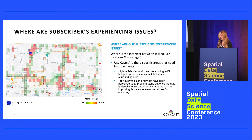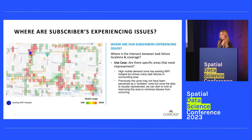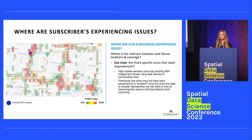The third use case — where are subscribers experiencing issues? Going back to task failures, we add a new layer of data onto our maps. The red points visualize moments where a subscriber has experienced a task failure. Our existing Xfinity Wi-Fi hotspot in the upper left corner, which we thought was doing its job offloading data and filling coverage gaps, turns out to have many subscribers experiencing task failures in that same location. Solutions include relocating the AP a few feet, or expanding that access point's coverage radius.